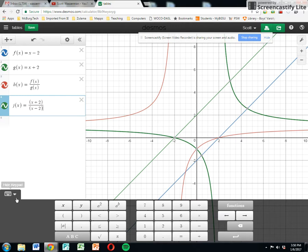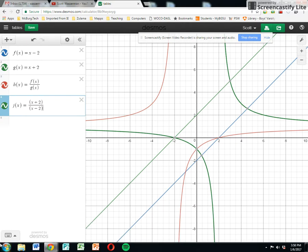Now, this screen is pretty much a mess. Things I can do to clear it up. I can get the keyboard up and down, and I can turn things on and off. So let's turn the original two functions off for a moment. And notice all we have left is we have the green one, which is x plus 2 divided by x minus 2, and we have the red one, which is f of x divided by g of x.